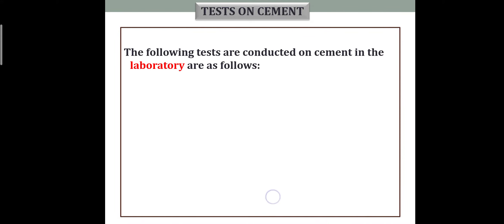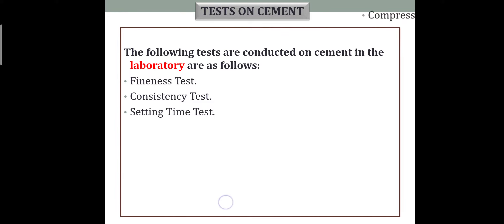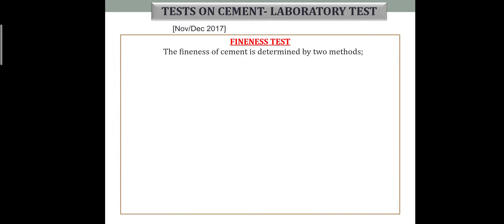The laboratory tests for cement include fineness test, consistency test, setting time test, compressive strength test, soundness test, and tensile strength test. These are repeated exam questions in the construction materials laboratory. We will start with the fineness test.